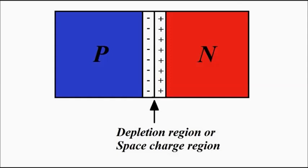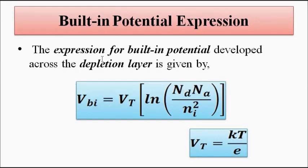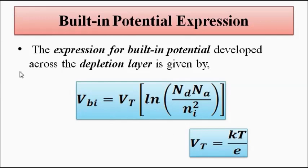The potential difference around this depletion region is called the barrier potential or built-in potential, and has a value of 0.7 V for silicon and 0.3 V for germanium. The expression of the built-in potential is given by: V_BI = V_T × ln(N_D × N_A / N_i²), where V_T is the thermal voltage (kT/e), N_D is the donor impurity concentration, N_A is the acceptor impurity concentration, and N_i is the intrinsic carrier concentration.